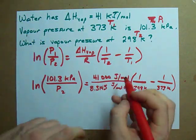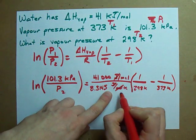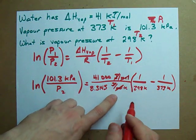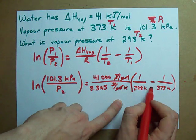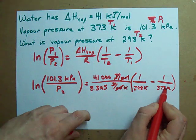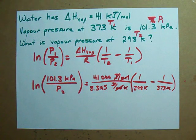Alright, now my units are going to cancel out here. I've got joules on top, joules on bottom, moles on bottom, moles on bottom. I've got Kelvin on the bottom. The Kelvin's cancel out, just trust me on that. Make sure all your temperatures are in Kelvin.